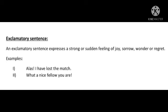Now let's see what is an exclamatory sentence. An exclamatory sentence expresses a strong or sudden feeling of joy, sorrow, wonder, or regret. We just blurt it out — we hear a news or see a sight, and we just speak it out. For example: 'Alas, I have lost a match.' 'What a nice fellow you are.' After seeing the Taj Mahal, the tourist said in amazement, 'What a wonderful piece of monument the Taj is.' Children, don't forget to put an exclamation mark at the end of the sentence or after the exclamatory word.